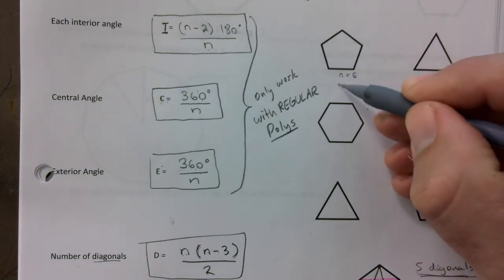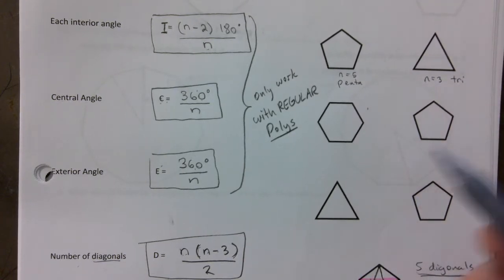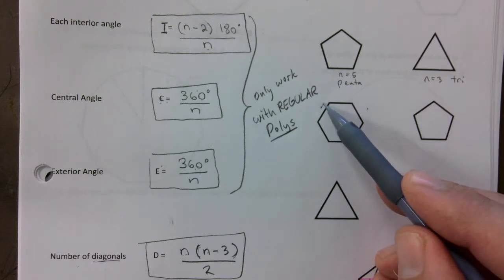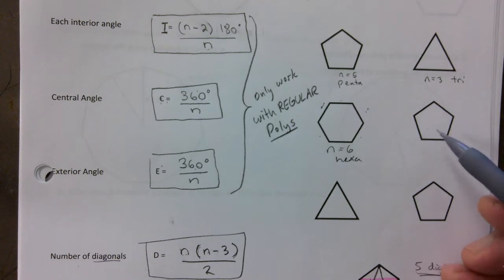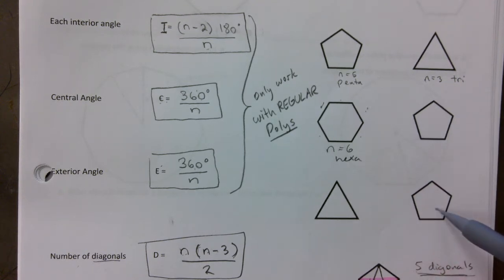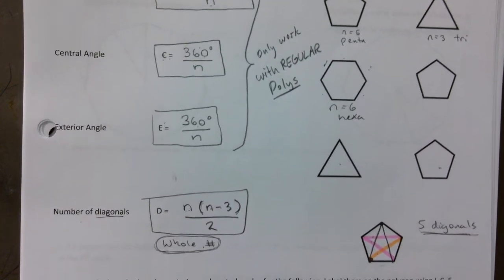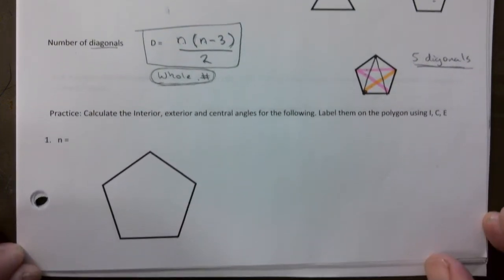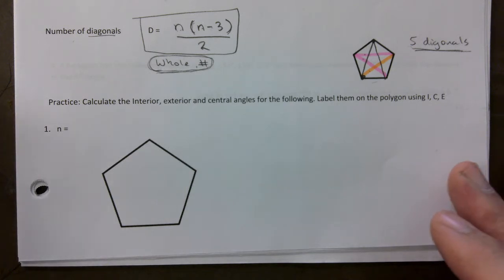Here n equals 5 — a pentagon. This one has n equals 3 — a triangle. Start counting: one, two, three, four, five, six — n equals 6, that's a hexagon. The formulas are on your study sheet and also on the yellow formula sheet. Let's do some math so you wake up.